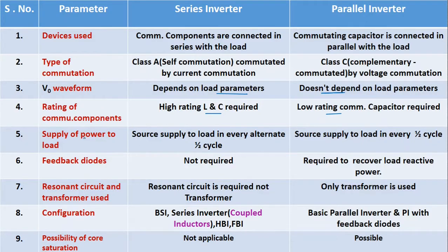Fifth one is supply of power to the load. In the series inverter, the source supplies power to the load in every alternate half cycle, whereas in the parallel inverter the source supplies power to the load in every half cycle.